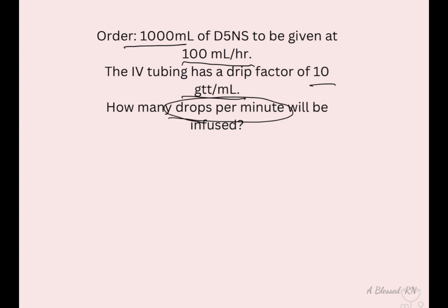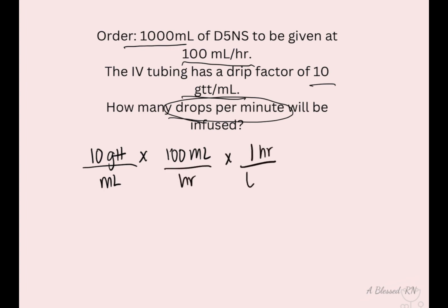When I use dimensional analysis, I like to start with what I'm going to end with — drops per minute. So I'll start with my drops on top. That's your drip factor: 10 drops per milliliter, multiplied by 100 mL per hour from your order, then multiply that times one hour over 60 minutes.